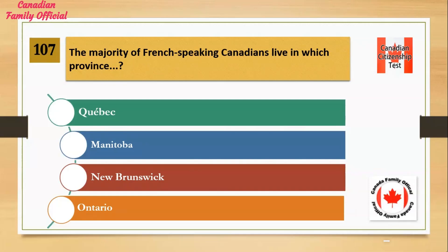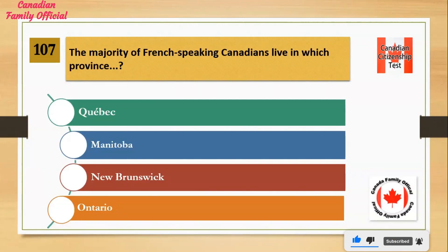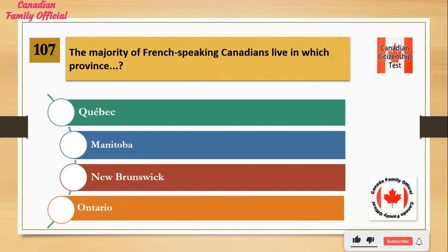The majority of French-speaking Canadians live in which province? Number 1: Quebec. Number 2: Manitoba. Number 3: New Brunswick. Number 4: Ontario. And the answer is Quebec.